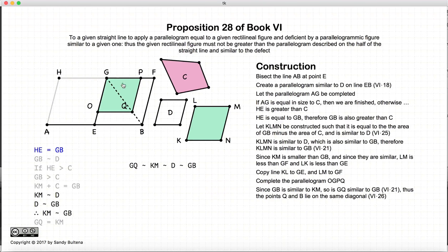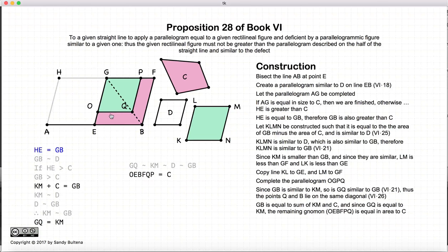Now since GQ is similar to GB, the diagonals are collinear, so we're going to draw the diagonal. What is left over, this gnomon, is equal to the area of C, because if you recall, KM is equal to GB minus C, or as it's written here, KM plus C is equal to GB.